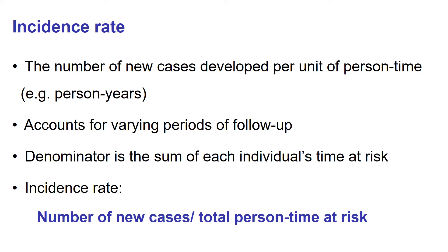For incidence rate, we measure the number of new cases developed per unit person time — it can be person years. It accounts for varying periods of follow-up by using person years or person time. The denominator is no longer individuals; it is the sum of each individual's time at risk. So the incidence rate is no longer a proportion — it is the number of new cases divided by total person time at risk.